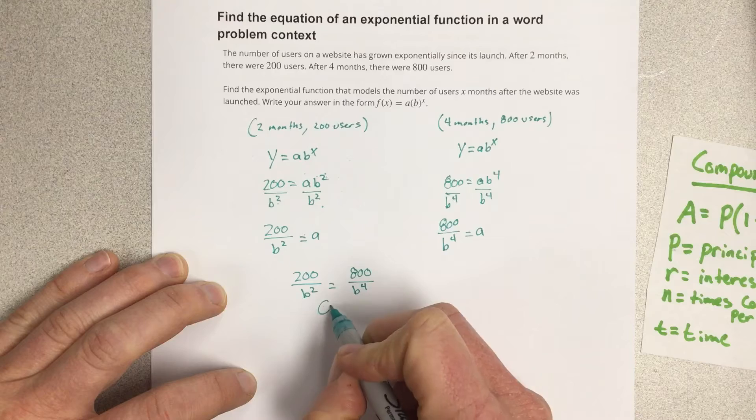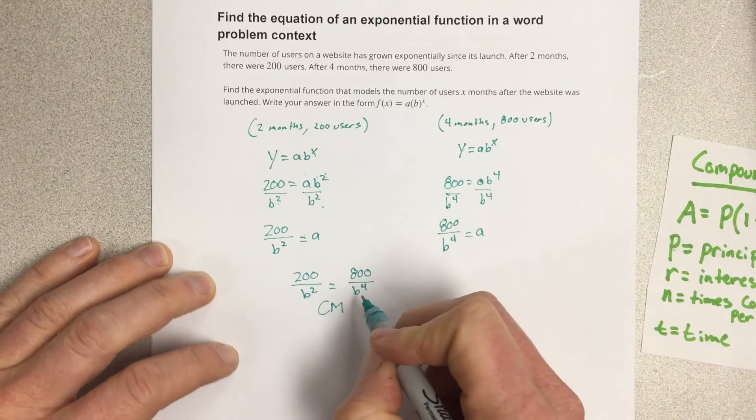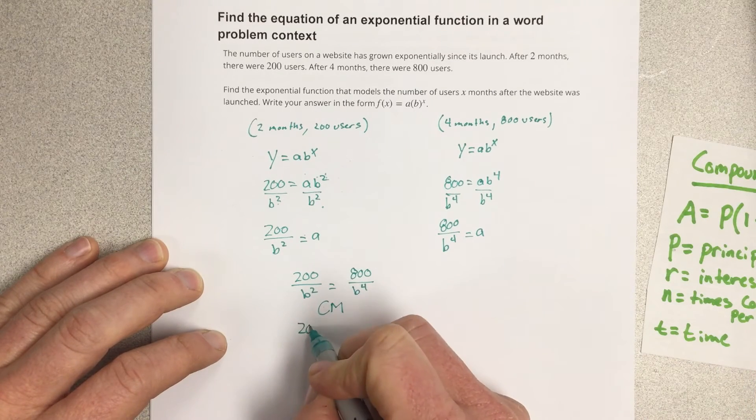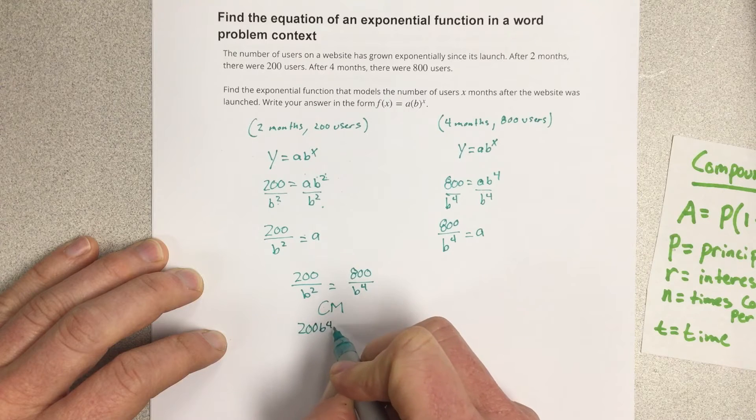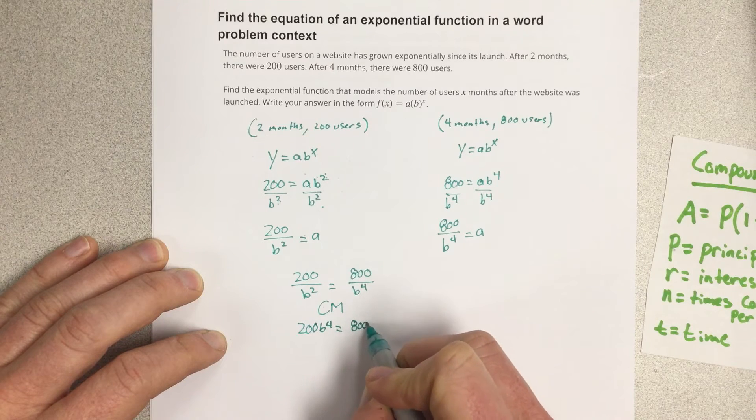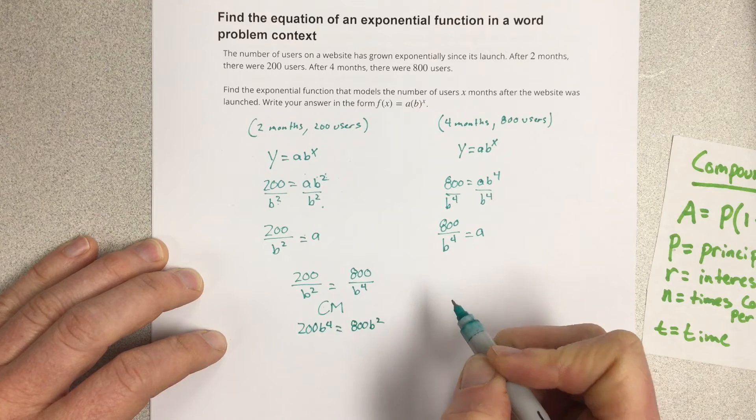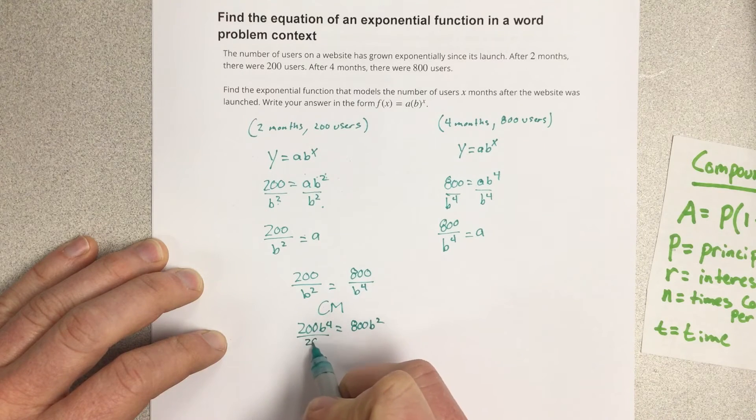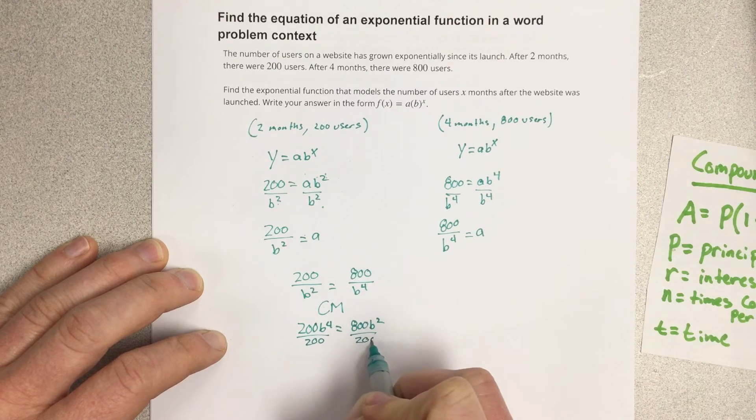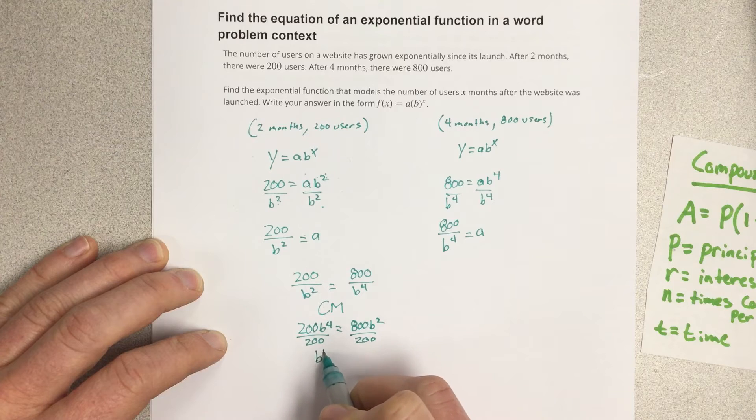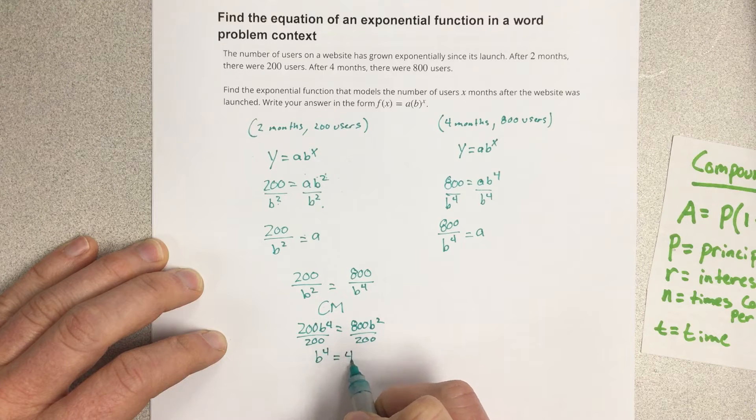Cross multiply, I'm going to use cm to say cross multiply, so b to the fourth times 200, 800 times b squared. And that's the divide both of these by 200. And I end up with b to the fourth equals 4b squared.